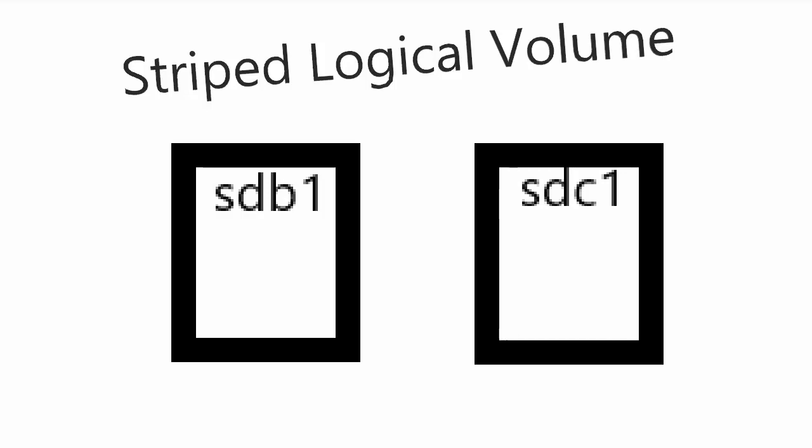And with a striped logical volume, what we're going to do is we're going to take two or possibly more than two drives. We're going to set each one of them up as a physical volume, add them all to the volume group, and then we're going to set it up so that when we do a write operation, we are going to write a stripe there on that drive, then write a stripe on that drive, and we're just going to keep on doing that until a write operation is complete.